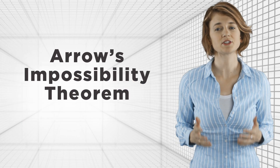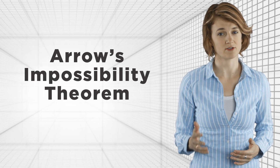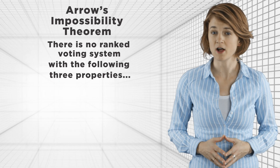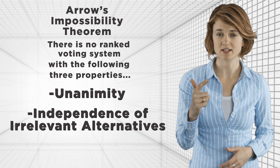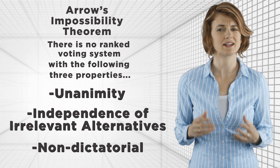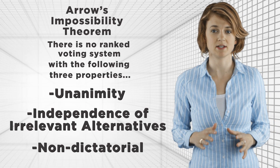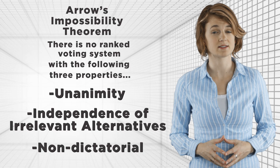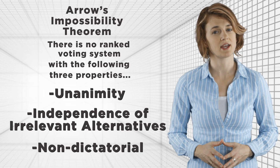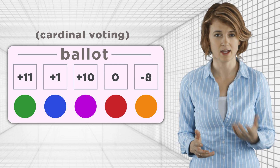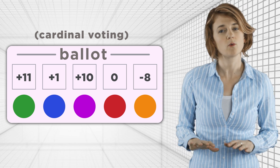Phrased another way, here's Arrow's impossibility theorem, also known as Arrow's paradox or Arrow's theorem: there is no rank voting system with the following three properties—unanimity, independence of irrelevant alternatives, and non-dictatorial. It's worth highlighting that Arrow's theorem only applies to rank voting systems. It doesn't apply to voting systems with other types of ballots, like cardinal voting, where each candidate is assigned any number. For example, a ballot might show somebody who loves green and purple, hates orange, and has mixed feelings about blue and red.